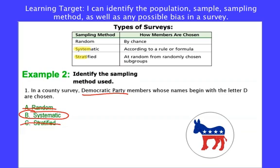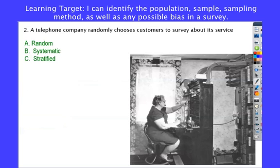A telephone company randomly chooses customers to survey about its service. This is right in the word — randomly. There's no rule, there are no subgroups — it's just a random survey.